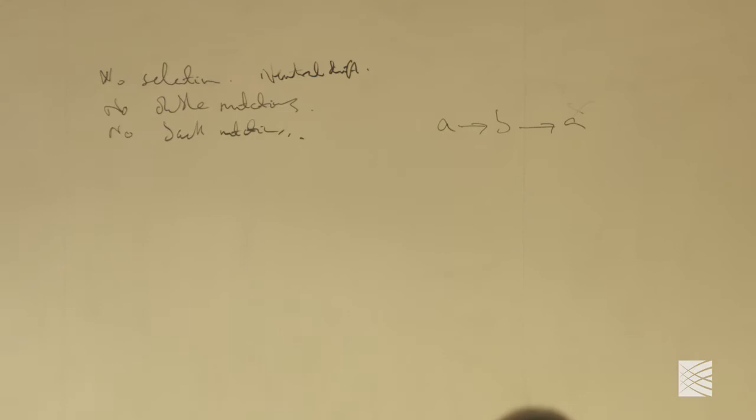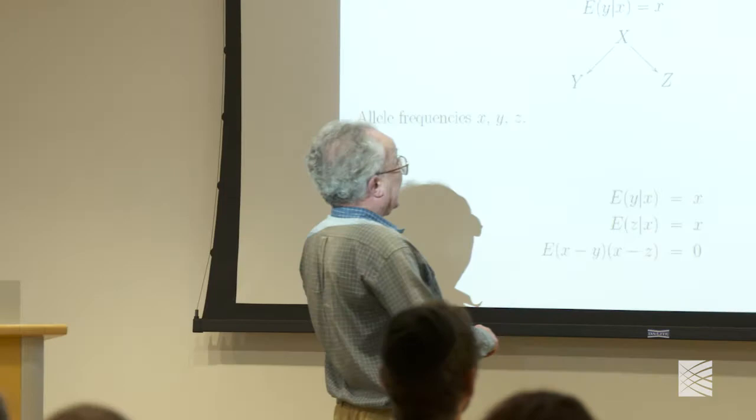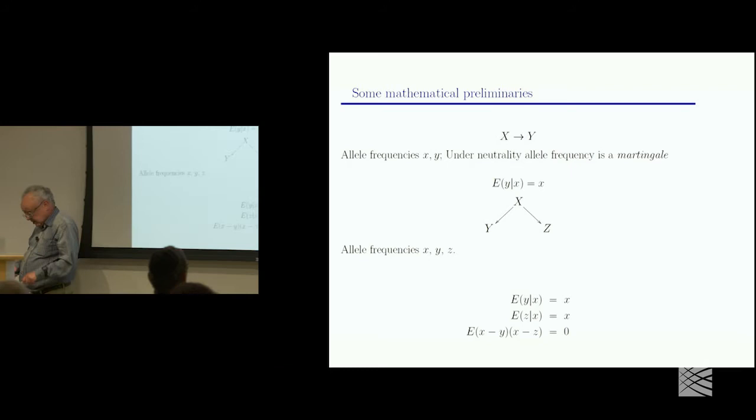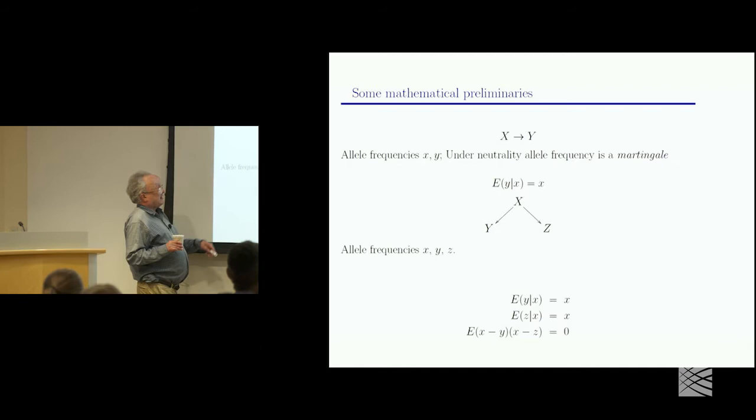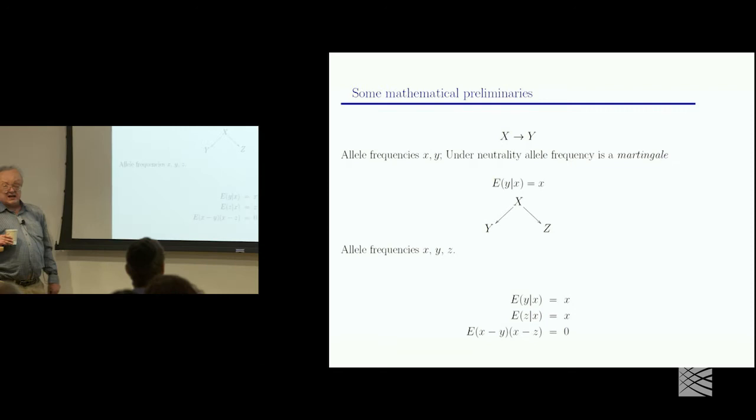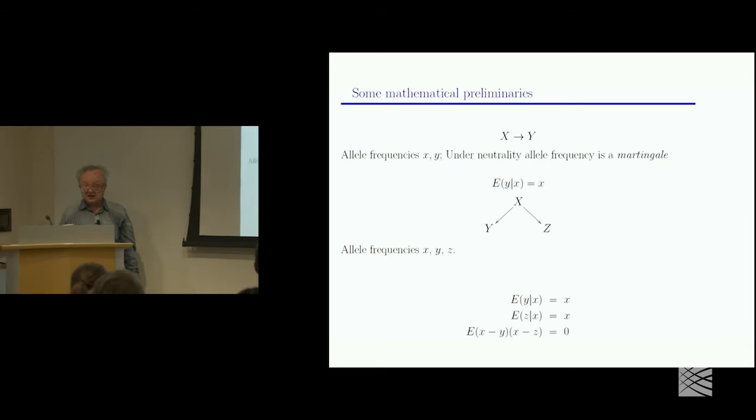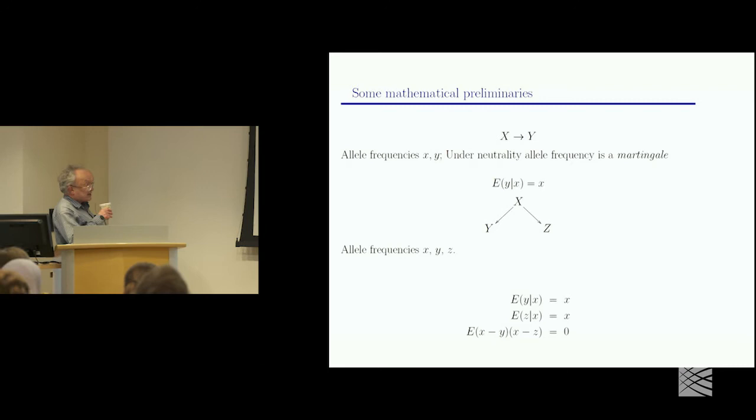So the point is, when you go along this edge here, we're just getting what genetics is called drift. So generation by generation, the allele frequencies slowly change, and the key fact is that the expected value of little y is x, which, if you know about stochastic processes, means that the allele frequencies as you move down here are a martingale.